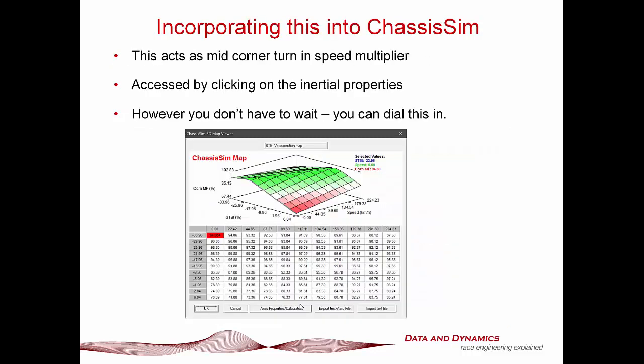Incorporating this into ChassisSim — in my first video about incorporating drivability into lap time simulation, I said to find a setup that your driver was really comfortable with. You would then click on the inertial property box, click on driver stability settings, load in your car file, the curvature file, your bump profile, and your circuit model, click OK, and it would generate this map.